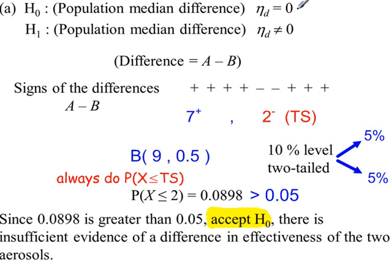So H0 and H1, using the population median difference. We've got our signs. Seven pluses, two minuses, so two is our test statistic, the smaller value. Seven plus two is nine.